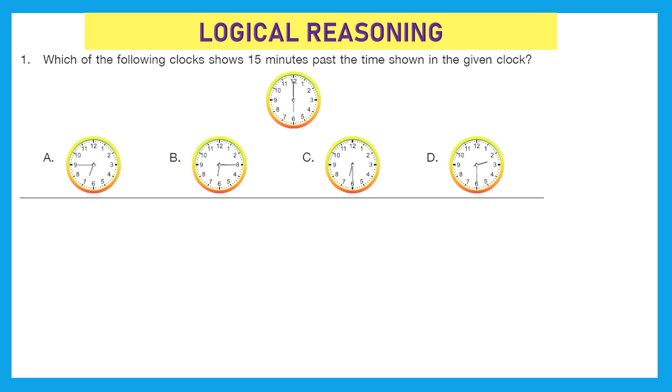Now out of option A, B, C and D which tells it is 6 hour and 15 minutes. That is option B because every number over here has a gap of 5 minutes. So if the minute hand reaches 1, it is 5 minutes. If it reaches 2, it is 10 minutes and if it reaches 3, it is 15 minutes. And in option B, the hour hand has passed 6 o'clock and the minute hand is on 3. That means it is 15 minutes past 6 o'clock.